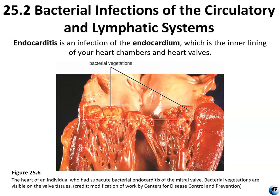Endocarditis is an inflammation of the endocardium — the lining of the heart or the heart valves. It can be classified as infective if a microorganism is involved, or non-infective if no microorganism is involved. Non-infective endocarditis involves the formation of platelet and fibrin thrombi on heart valves and the surrounding endocardium in response to trauma, circulating immune complexes, vasculitis, or a hypercoagulated state. The most common cause of infectious endocarditis is bacterial, but it can also be caused by fungi. Figure 25.6 shows the heart of an individual who had subacute bacterial endocarditis of the mitral valve, with bacterial vegetations visible on the valve tissue.